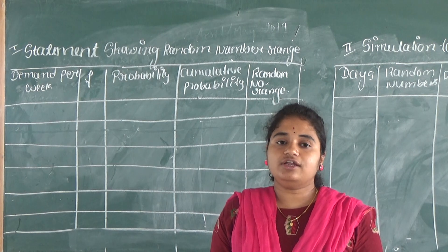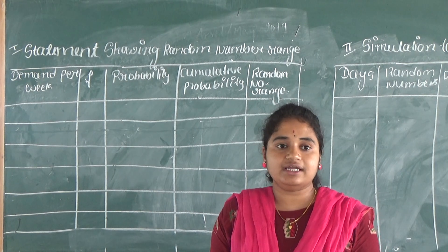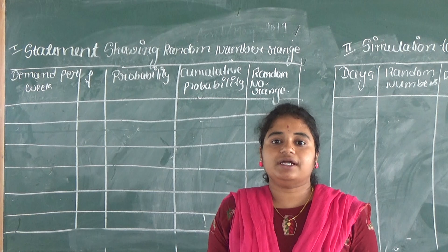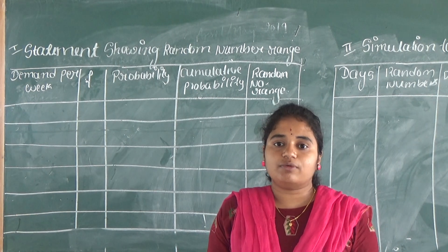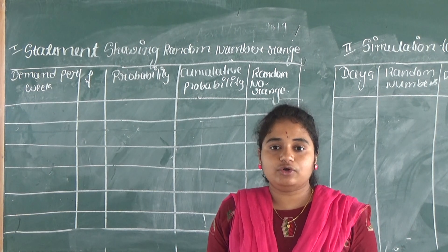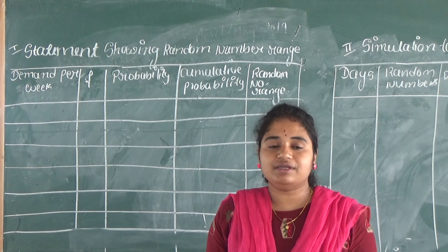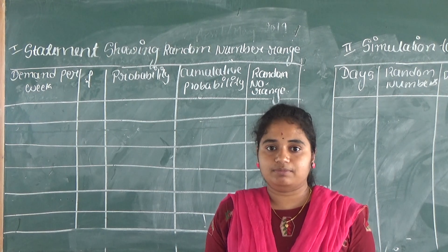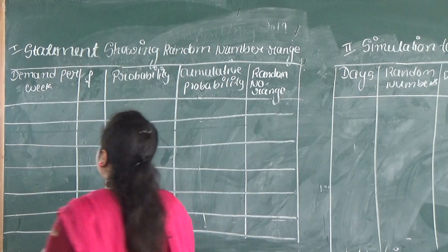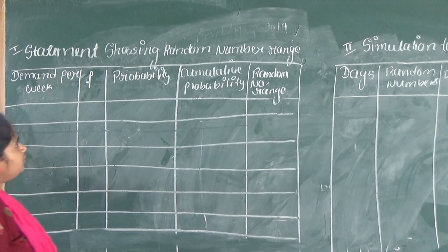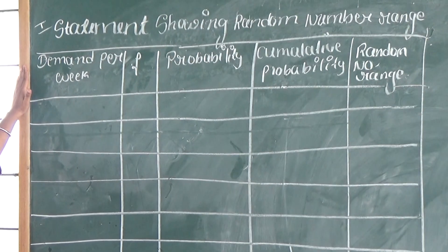You already know the meaning of simulation — that is finding the expected demand. Simulation problems are related to probability. Probability means may be or may not be. So here, in order to calculate this, first we have to draw this chart.